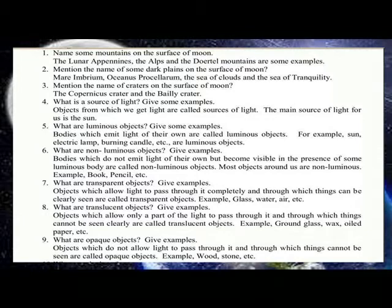What are luminous objects? Give some examples. Bodies which emit light of their own are called luminous objects. For example, sun, electric lamp, burning candle, etc. are luminous objects.